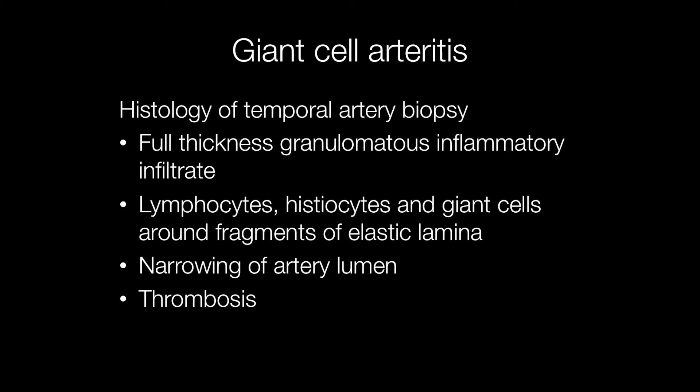Histological features of giant cell arteritis include full thickness granulomatous inflammation of the artery wall. There are lymphocytes, histiocytes, and of course giant cells, as the name implies. The giant cells tend to be situated around fragments of disrupted elastic lamina. In addition, there may be narrowing of the lumen of the artery and thrombosis.